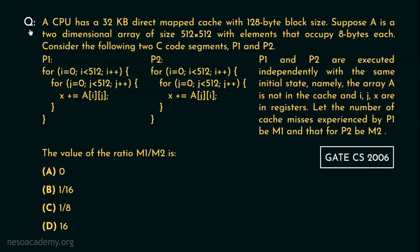Now let's get to the question. A CPU has a 32 kilobyte direct mapped cache with 128 byte block size. That means the size of the cache is 32 kilobytes and the block or the line size is 128 bytes. Suppose A is a two dimensional array of size 512 by 512 with elements that occupy 8 bytes each. That clearly means A is a 2D array with 512 rows and 512 columns, where every element is going to take 8 bytes.